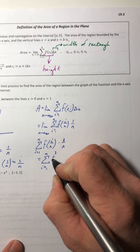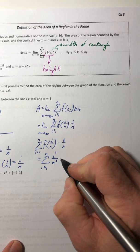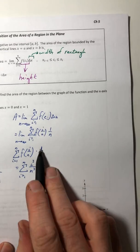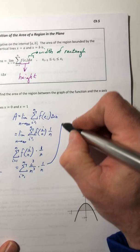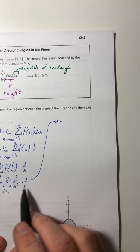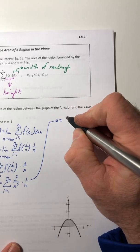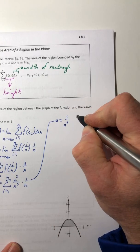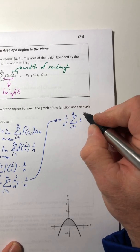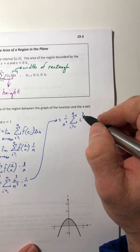I'm going to take i over n. I'm going to stick it in for x. And I end up with i to the third over n to the third. And I still have one over n right there. So let's keep going.